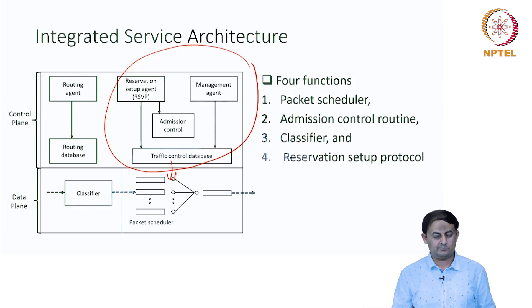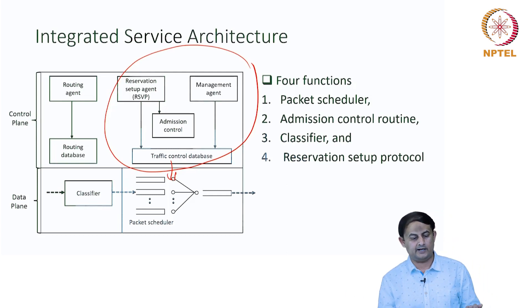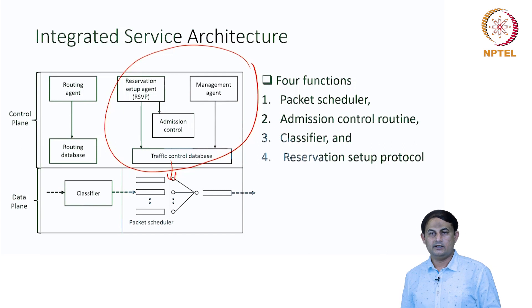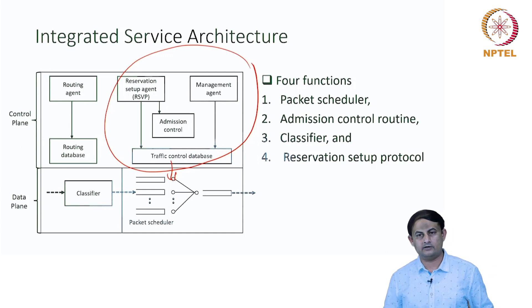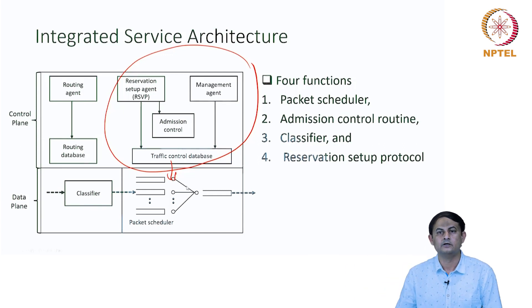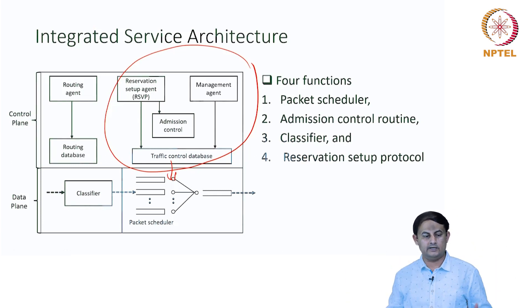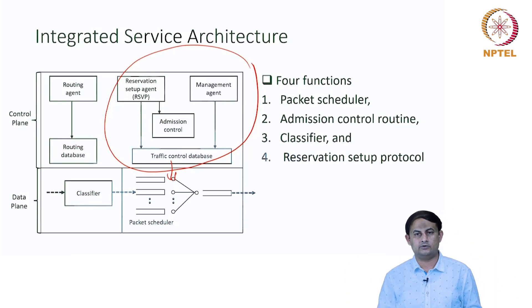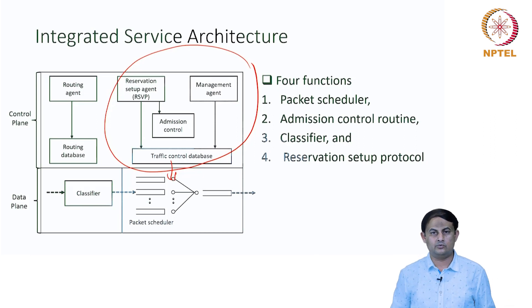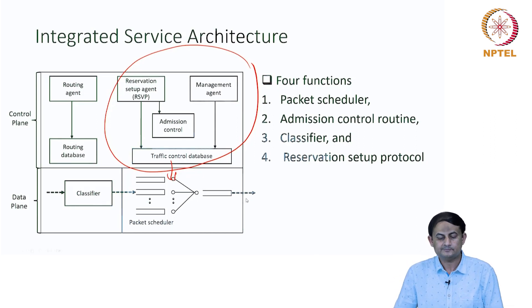Taking reference from the traffic control database, the scheduler picks packets from different queues in a certain order to meet the quality of service requirements of different applications. That is what is inside the router when you go with the integrated service architecture.